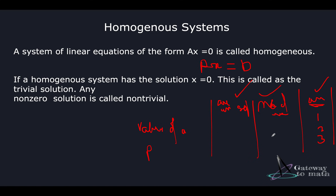Homogeneous systems are important for understanding relationships between column entries in data because they help you equate the matrix with zero. When a matrix is equated with zero, it becomes easier to move variables from the left-hand side to the right-hand side without worrying about the right-hand side value — it's just zero, so you're not changing anything significant. To do that, you represent your columns in parametric form — these are the two concepts we're studying, and they are quite important tools in data science.